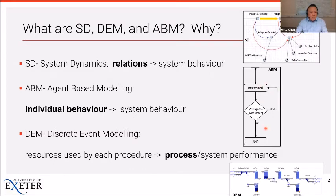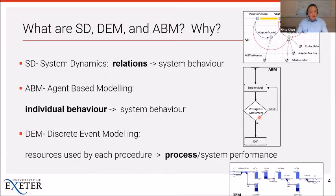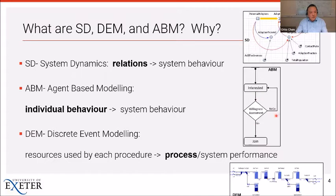ABM usually involves this kind of yes-or-no decision for each individual. For example, if there's a free aerobic lesson as a promotion, not every one of the 10 customers will be interested. The first customer might consider the promotion and decide to join, while the second customer might not be affected by the promotion and decide not to join. So ABM models individual agents who can behave differently.